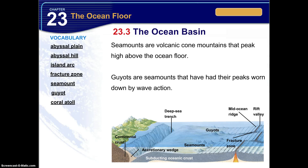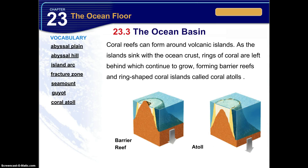Seamounts are volcanic cone mountains that peak high above the ocean floor, and guyots are seamounts that have had their peaks worn down by wave action, giving them a flat top. Coral reefs can form around volcanic islands. As the island sinks with the ocean crust, rings of coral are left behind which continue to grow. These form barrier reefs and ring-shaped coral islands called coral atolls. A barrier reef still has crust sticking up in the center, whereas an atoll has sunk underneath the surface of the ocean.